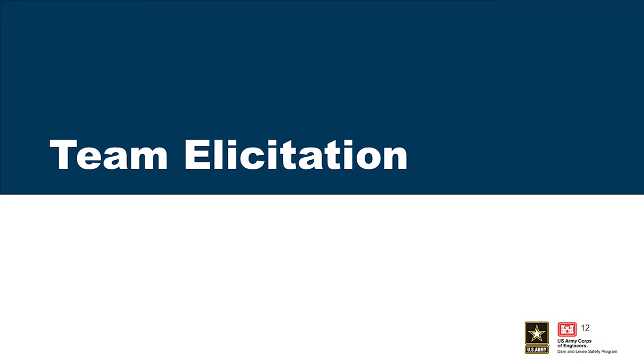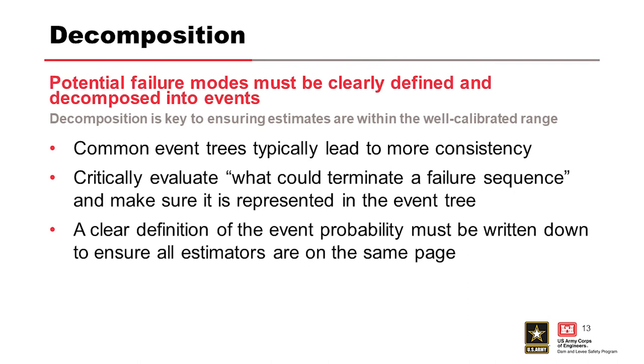Team elicitation is the facilitated process to draw out or elicit a response — in our case, typically a probability estimate, but it could also be an input parameter to an analysis. The overall process can be simply described as: estimate, discuss, and if necessary, estimate again. Potential failure modes must be clearly defined from initiation to failure or breach, and the full sequence of events is decomposed into events that constitute an event tree, which is the blueprint for the risk analysis. Decomposition is also key to making sure that the estimates are within a well-calibrated range.